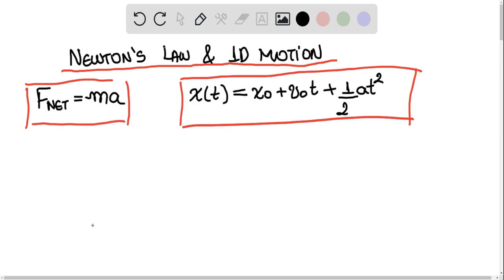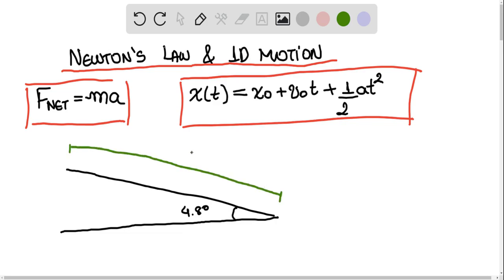So in this exercise, let's suppose that we have a car that is going down on a road that is slightly tilted by an angle of 4.8 degrees. And we know that the total length of this road is 301 meters.